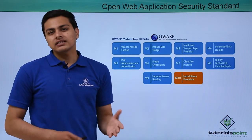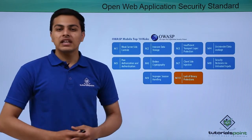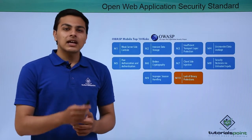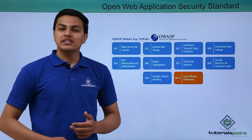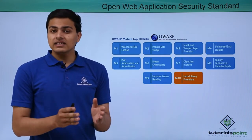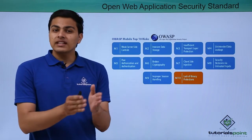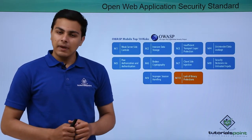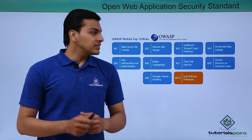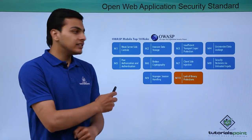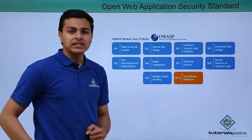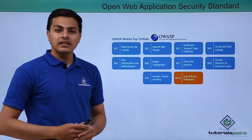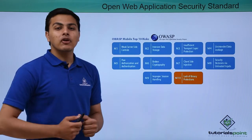After a few years, this organization or community released their standards of web application security as well as mobile application security, where they listed out various security issues and vulnerabilities depending upon their impact. You can see here their standard — OWASP Mobile Top 10 risk — listing out top 10 mobile application security risks depending upon their impact.